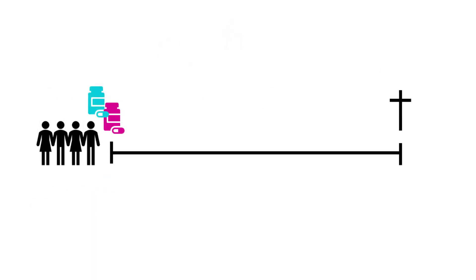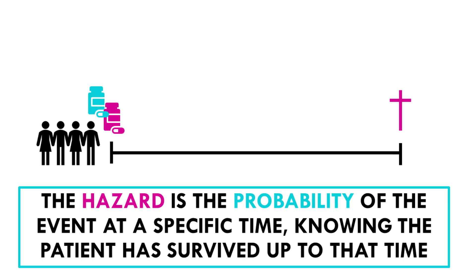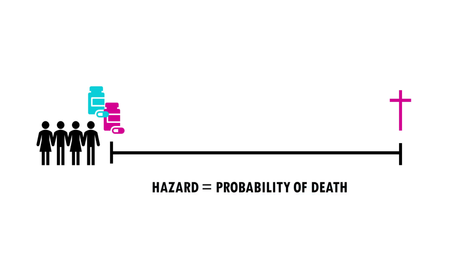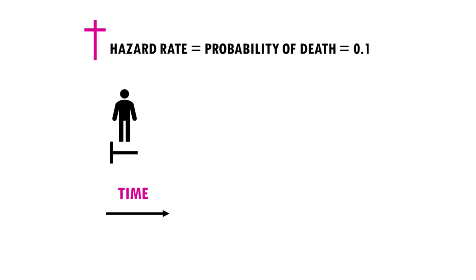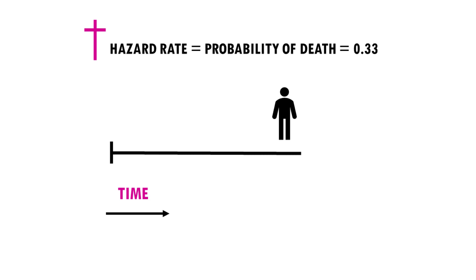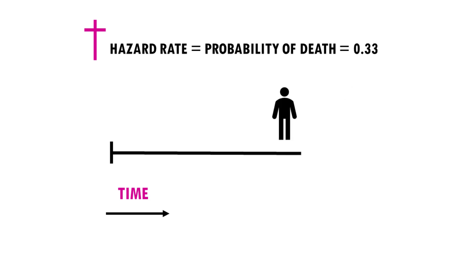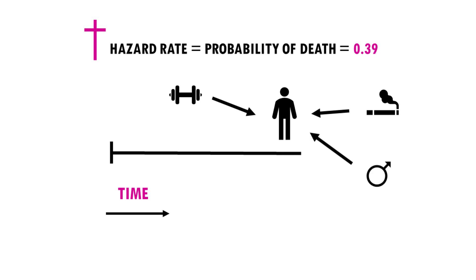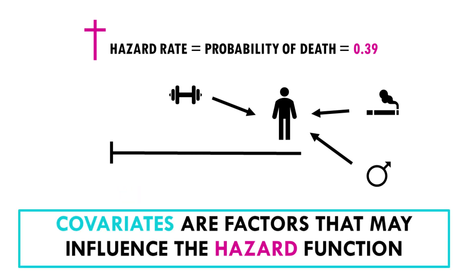In this model, the hazard rate is the probability of the event happening given that you have survived up to a specific point in time. For example, in a clinical trial where the event of interest is death, the hazard rate would be the probability of dying given that a patient has survived up to a given point in time — the risk of death at that particular moment. The nice thing about Cox regression is that you can include covariates, which are independent variables that you may think influence the time to event. These covariates can be categorical, for example gender, but they can also be discrete or continuous, for example blood pressure, and are used to model how different factors affect the hazard function.